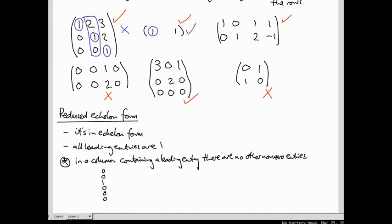This third guy, again, it's in echelon form. The leading entries are ones. So that's good. And in those columns, there's only zeros, other than the leading entry. So this is in reduced echelon form.